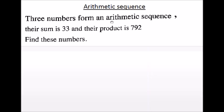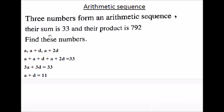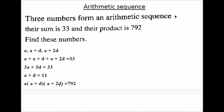Example: three numbers form an arithmetic sequence. Their sum is 33 and their product is 792. Find these numbers. If we have three numbers, we assume them to be A, A plus D, and A plus 2D. Here we are given the sum and the product. The sum will give an equation in two unknowns A and D. Then find the product — this will give a second degree equation in A and D. Solve the two equations and find A and D.